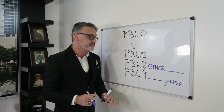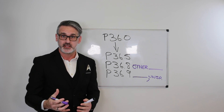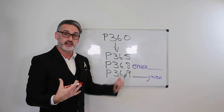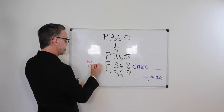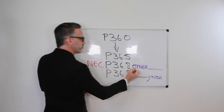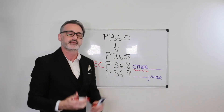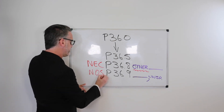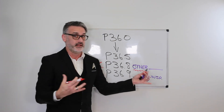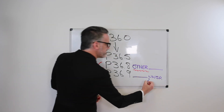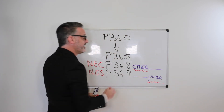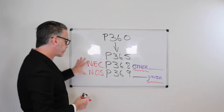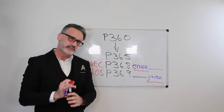So that's how we know the NEC codes versus the NOS codes in diagnosis coding. P36.8 says 'other bacterial sepsis of the newborn' — that word 'other' in front tells us it is an NEC code. And then P36.9 says 'bacterial sepsis of newborn, unspecified' — that ', unspecified' phrase tells us we're dealing with an NOS code.